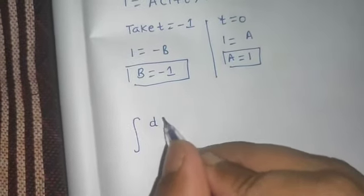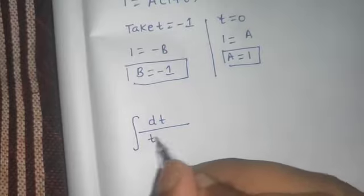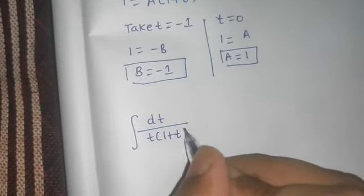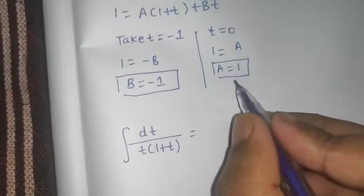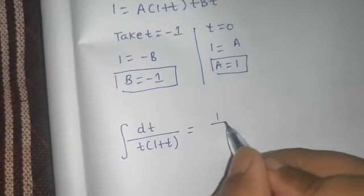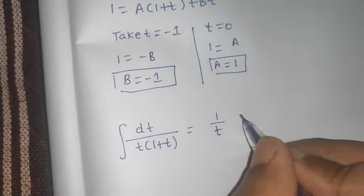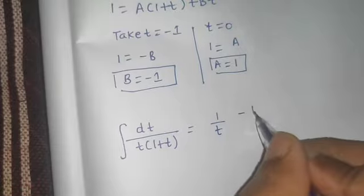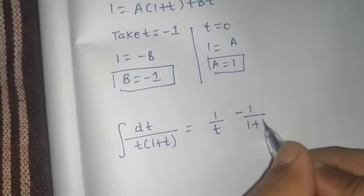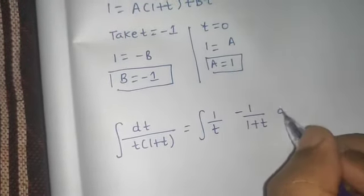The integral dt/[t(1+t)] becomes 1/t plus B/(1+t), which is 1/t minus 1/(1+t), integrated with respect to t.